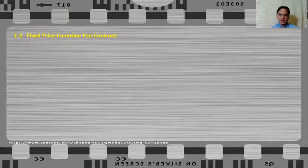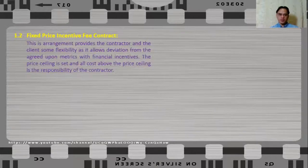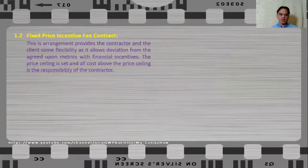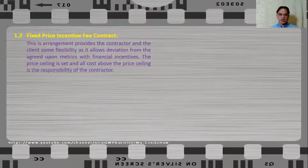Let us now take a look at fixed price incentive fee contract. The price is still fixed, but there is some sort of incentive for the contractor. This arrangement provides both the contractor and the client some flexibility as it allows deviation from the agreed-upon metrics with financial incentives. The price ceiling is set and all costs above the price ceiling are the responsibility of the contractor.